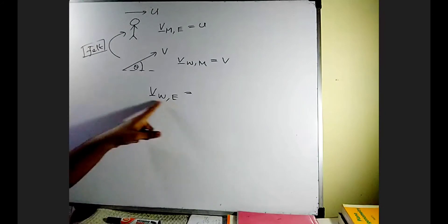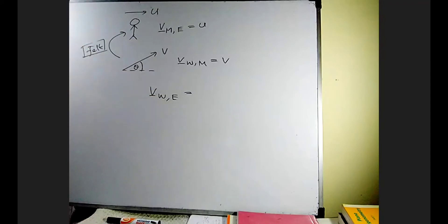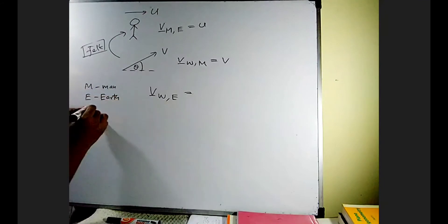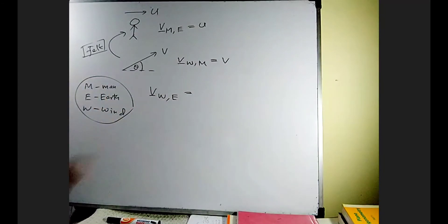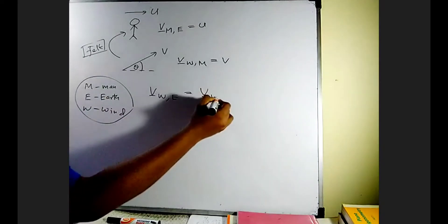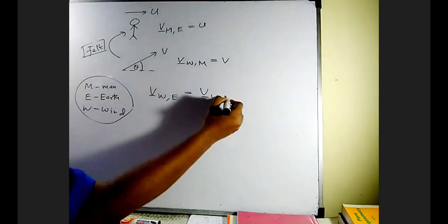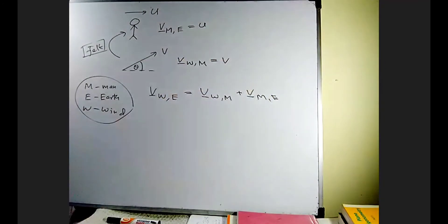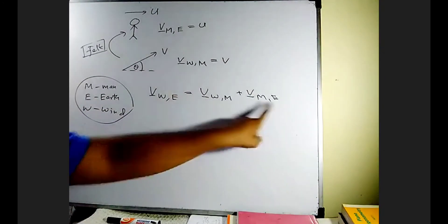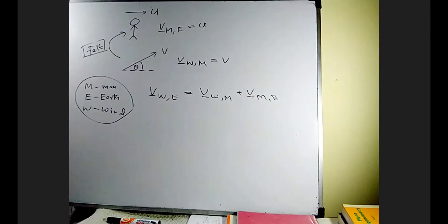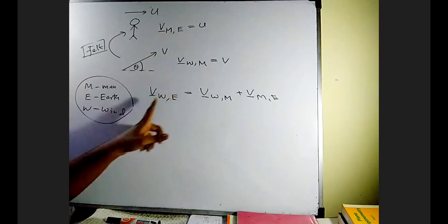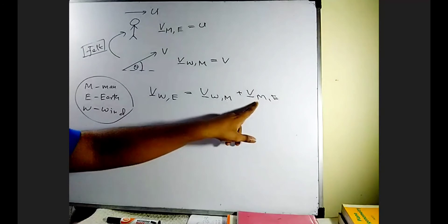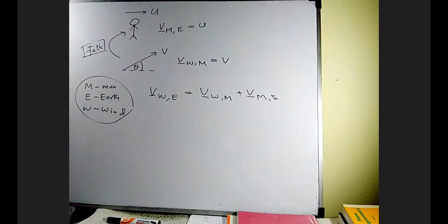Our target is the velocity of wind with respect to earth. To apply the theorem, we have three entities: M for man, E for earth, and W for wind. In between W and E we introduce the third term M, so the equation becomes: velocity of wind with respect to earth equals velocity of wind with respect to man, plus velocity of man with respect to earth. That is the equation of relative velocity.